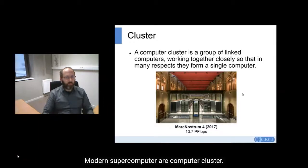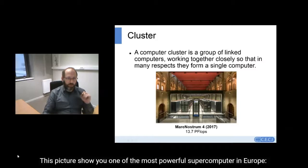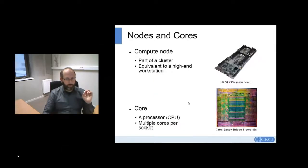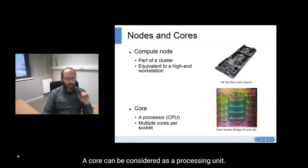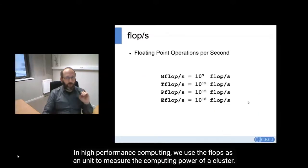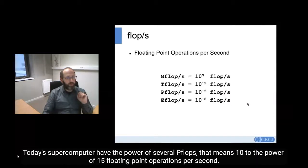Modern supercomputers are computer clusters. A cluster is a group of servers that work together to be seen as a single computer. Basically, a cluster is composed of compute nodes, and a compute node is a powerful computer. Each compute node contains several cores, and a core can be considered as a processing unit. In high performance computing, we use the flop as a unit to measure the computing power of a cluster. A flop is an arithmetic operation on a floating-point number. Today's supercomputers have the power of several petaflops — that means 10 to the power of 15 floating-point operations per second.